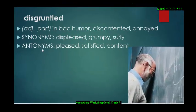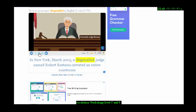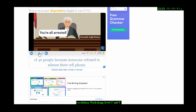Next word is disgruntled. It's an adjective and participle, which means in a bad humor, like this person in the picture, he's angry, or displeased, not happy, discontented, annoyed. In New York, March 2005, a disgruntled judge named Robert Restanino arrested an entire courtroom of 46 people because someone refused to silence their cell phone.